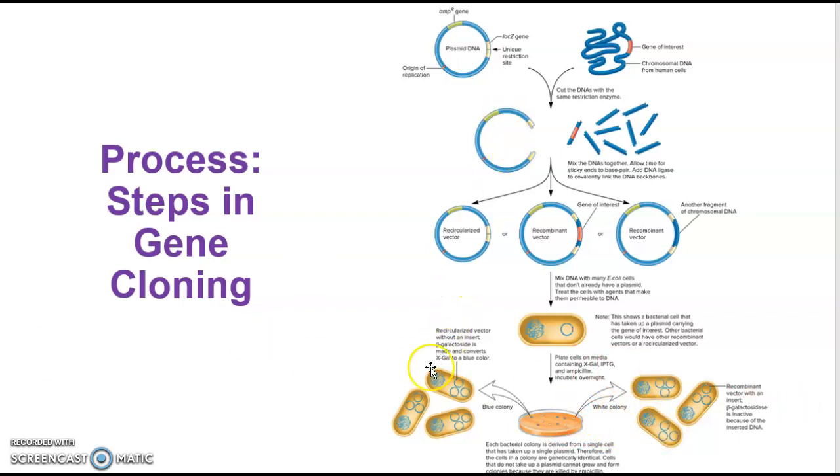And so this is the process of gene cloning. You have two different types of DNA, your plasmid and your chromosomal. You cut both with a restriction enzyme. You hope that they insert together. You seal them with the ligase and then you plate them, or you have them taken up by bacteria, then you plate them to see what happens.